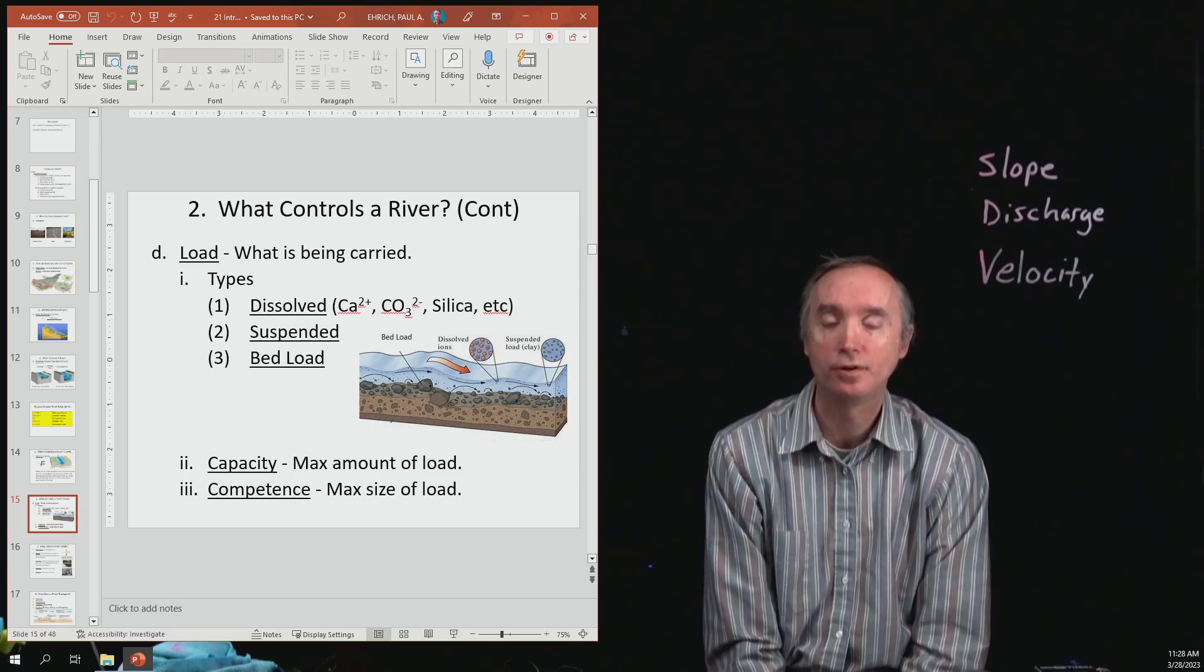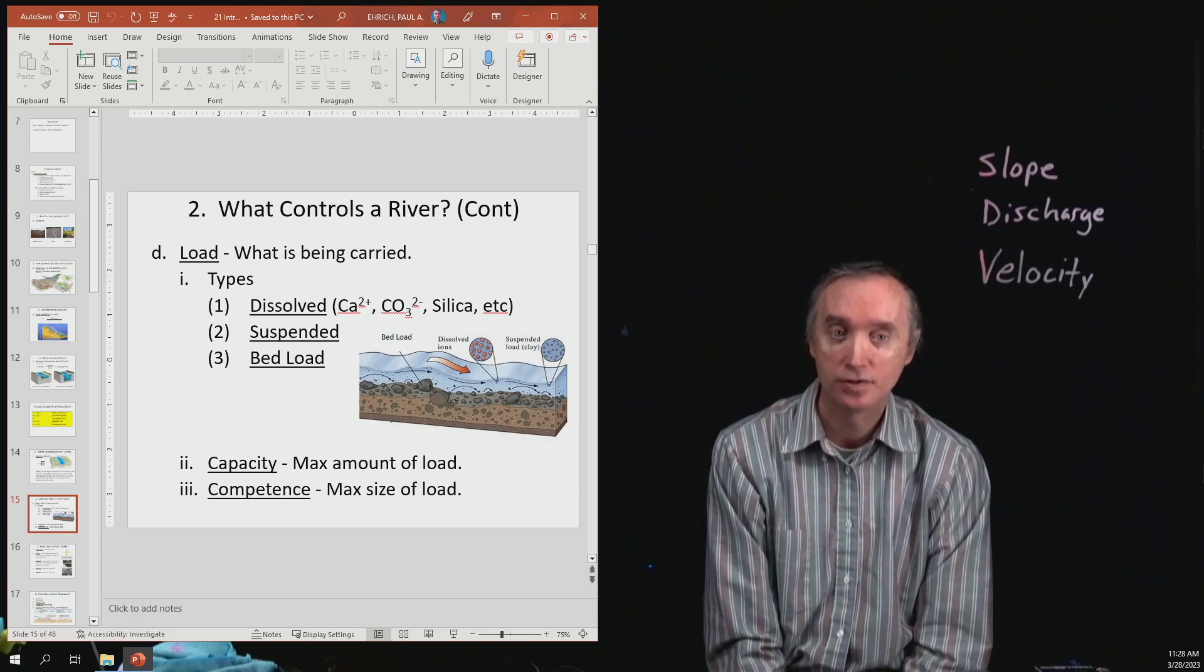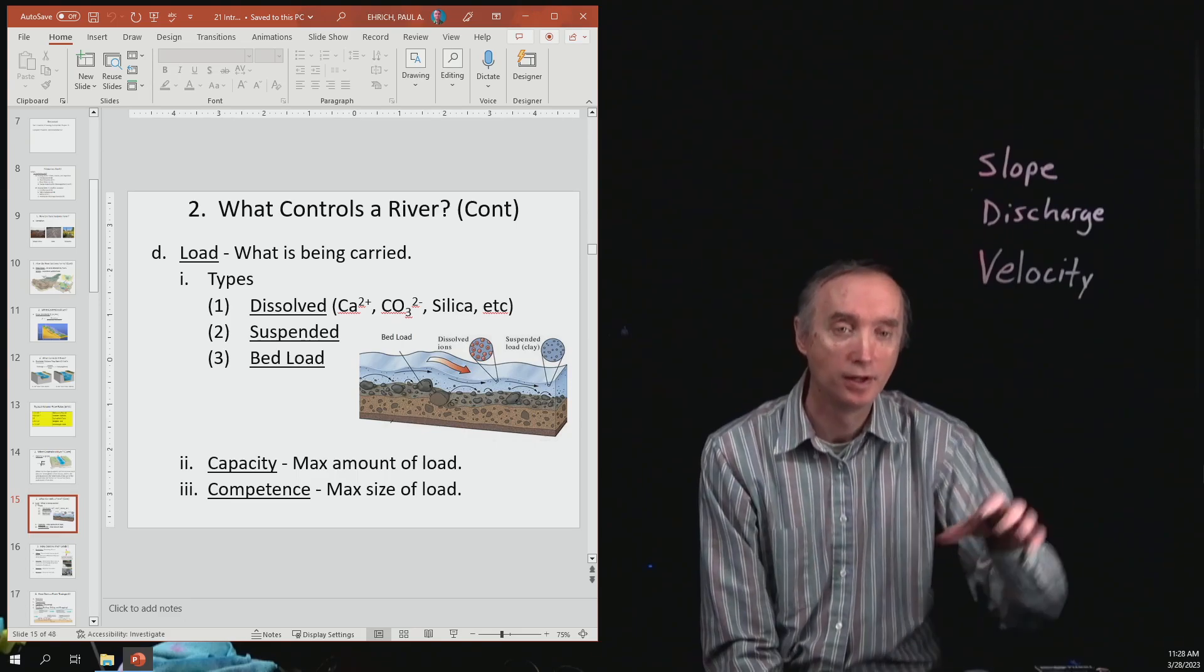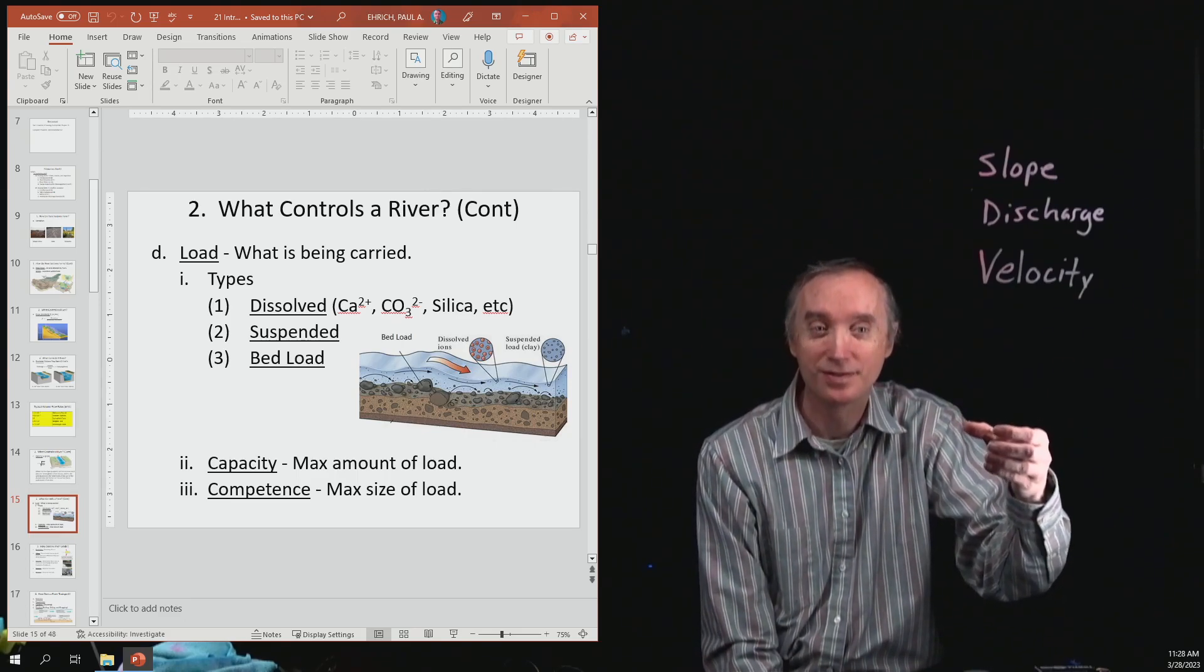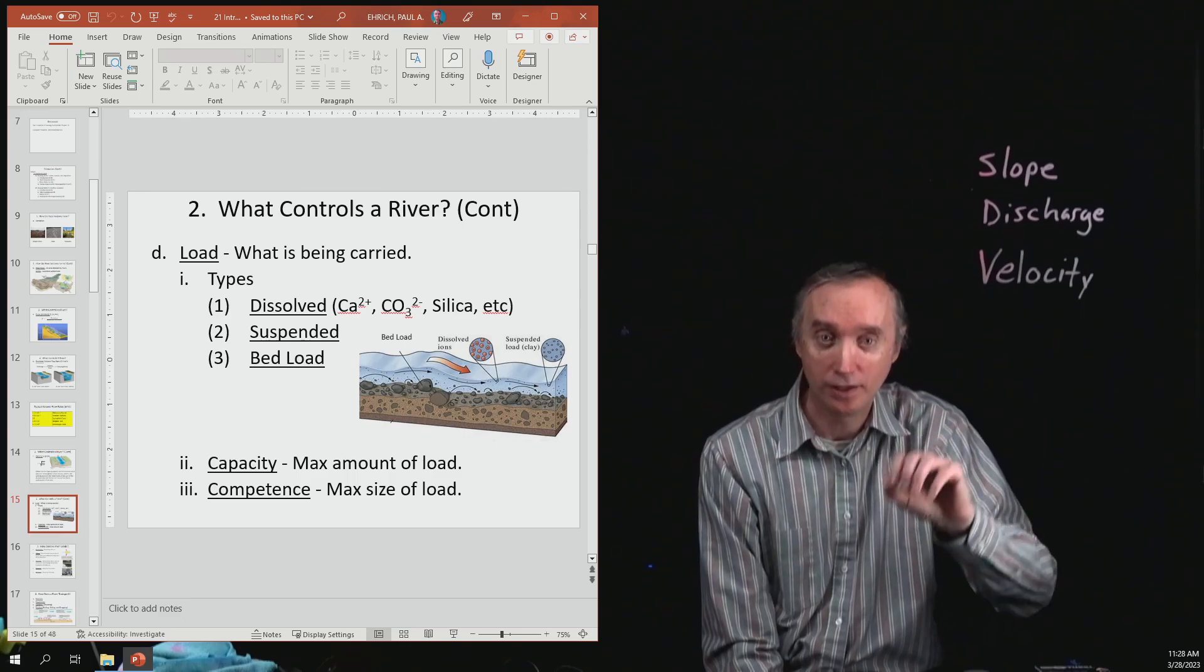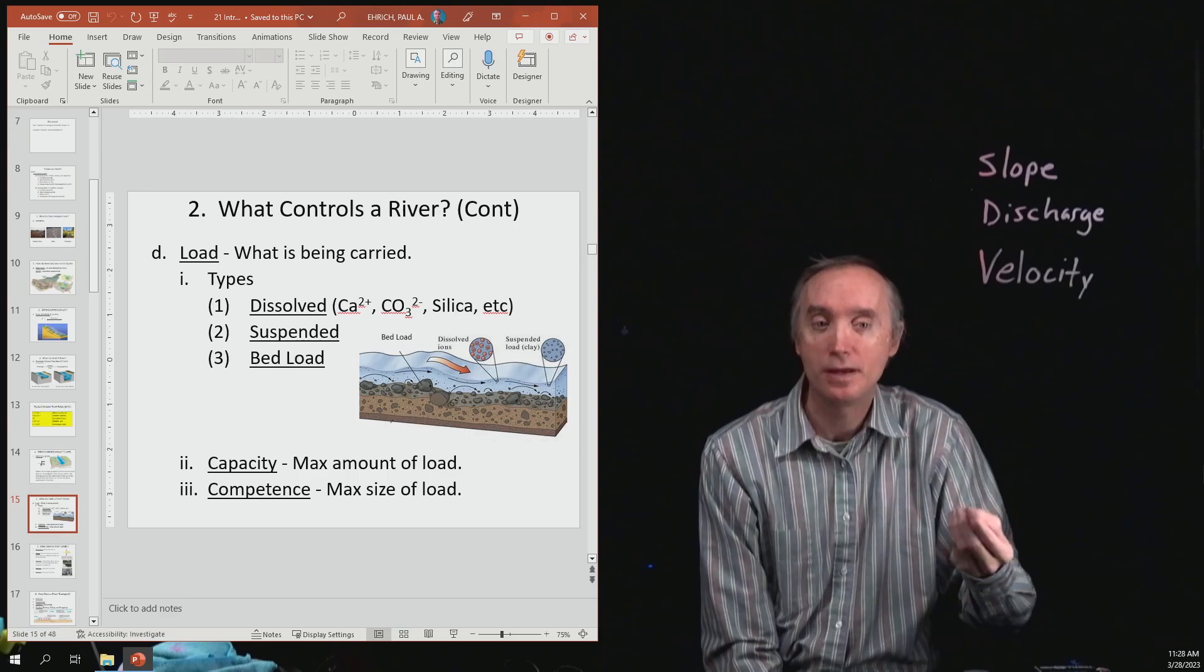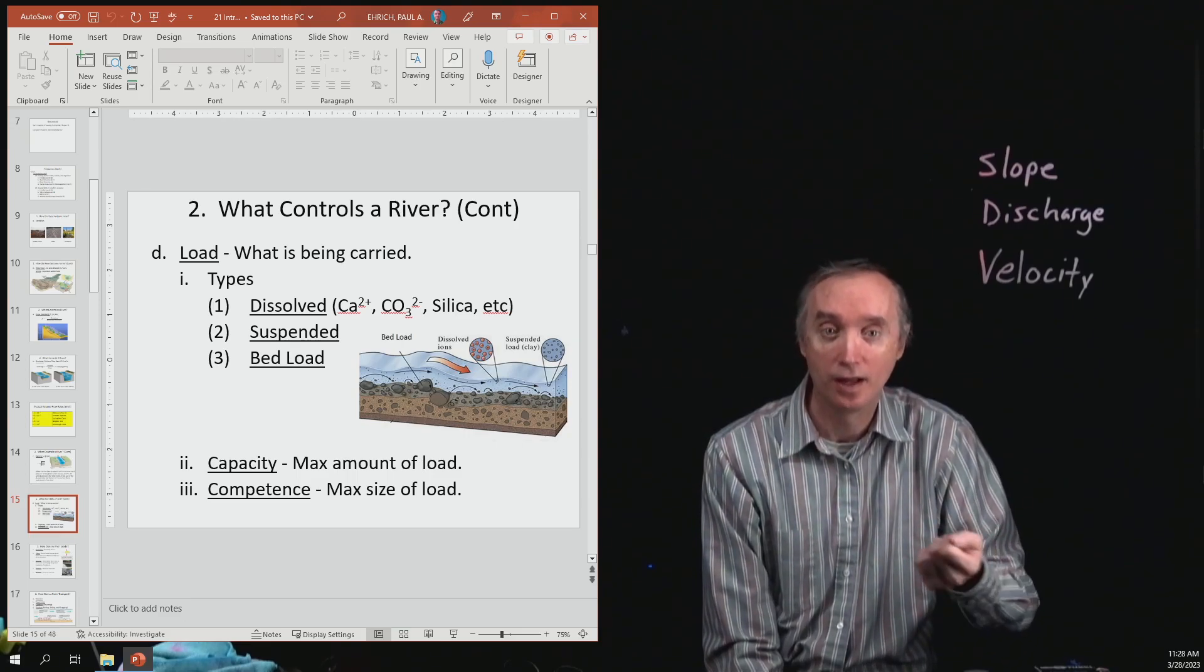Then you've got material that is very light and it is suspended. So normally when, let's say we're talking about the Mississippi River, and you scoop out a glass full of Mississippi River, it's going to be very muddy. Those are materials that are suspended in the water, things like silt and clay.